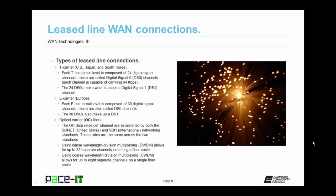There are different types of leased line connections. In the United States, Japan, and South Korea, there are T carrier lines. Each T line is composed of 24 digital signal channels — called digital signal zero channels or DSO channels — each capable of carrying 64 kilobits per second. The 24 DSOs make up what is called a DS1 channel. In Europe, there are E carrier lines. Each E line is composed of 30 digital signal channels — also called DSO channels — and the 30 DSO channels also make up what is called a DS1 channel.